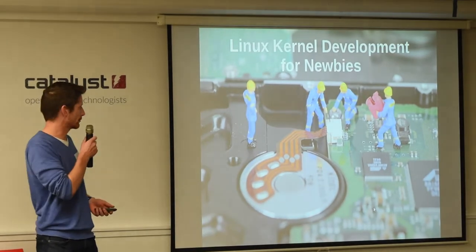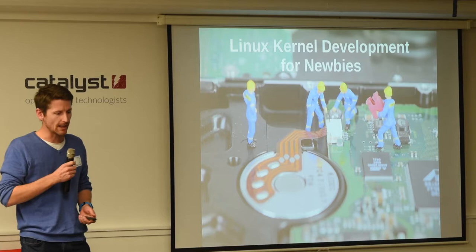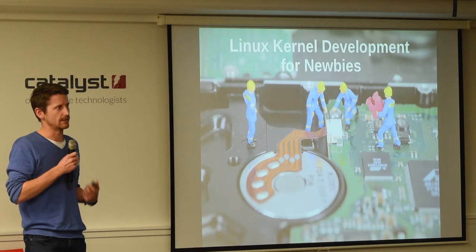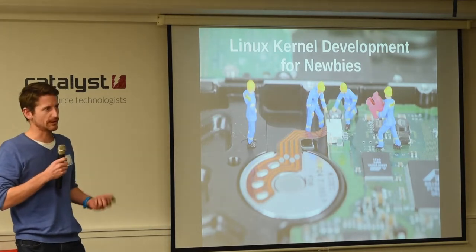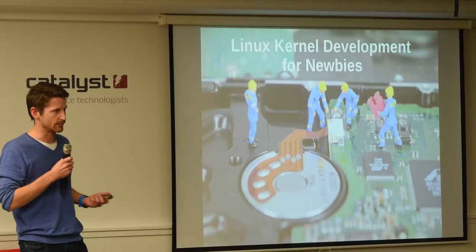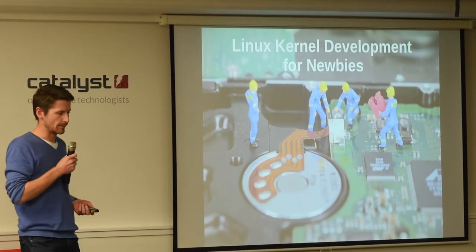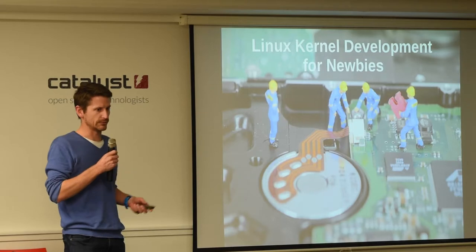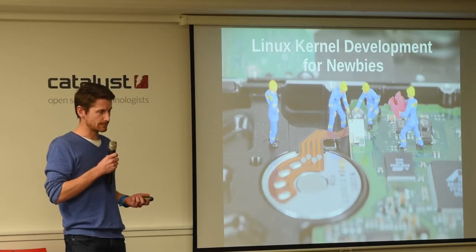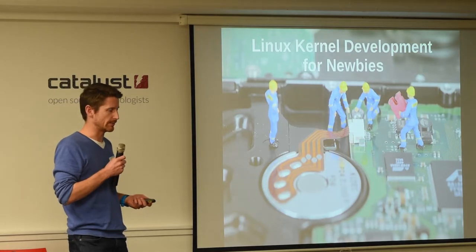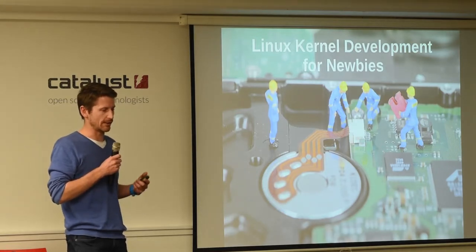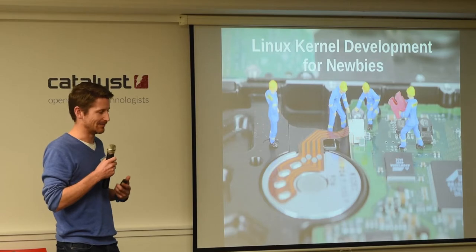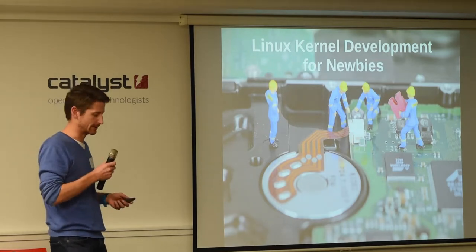I'm going to be going through a beginner's guide to Linux kernel development. If you've ever been curious about contributing to the upstream Linux kernel but haven't quite known where to get started, hopefully this will be useful to you. My background is in embedded software development, so I've spent a bit of time at the Linux kernel level, but despite that I've only got a handful of upstream commits to my name. I still make a lot of very dumb newbie mistakes that I'm going to go into in more detail.